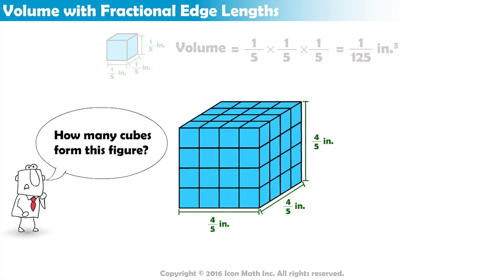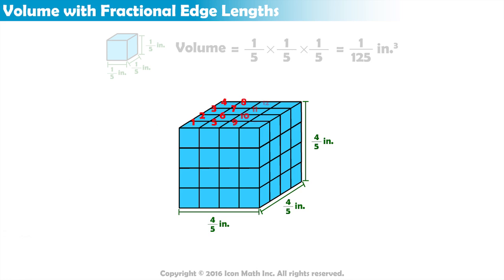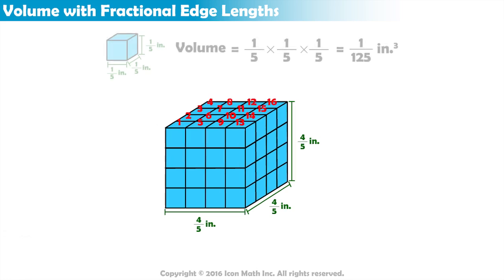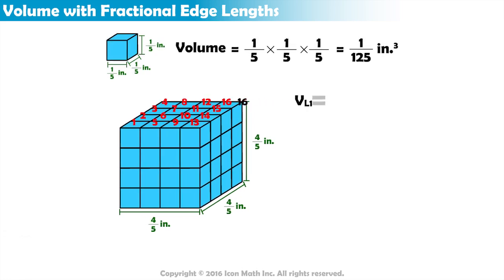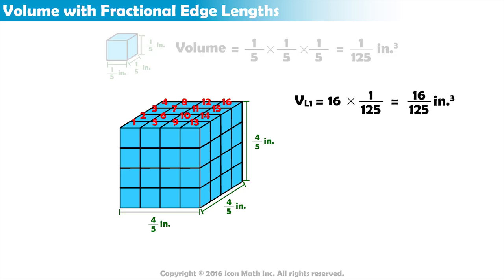How many cubes form our larger figure? The top layer is made of 16 smaller cubes. So, the top layer of the cube has a volume of 16 times 1 over 125 inches cubed or 16 over 125 inches cubed.